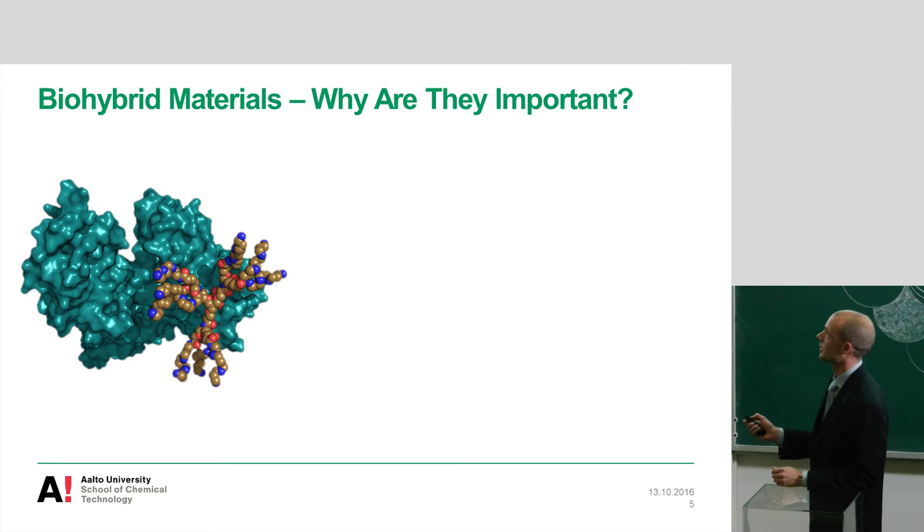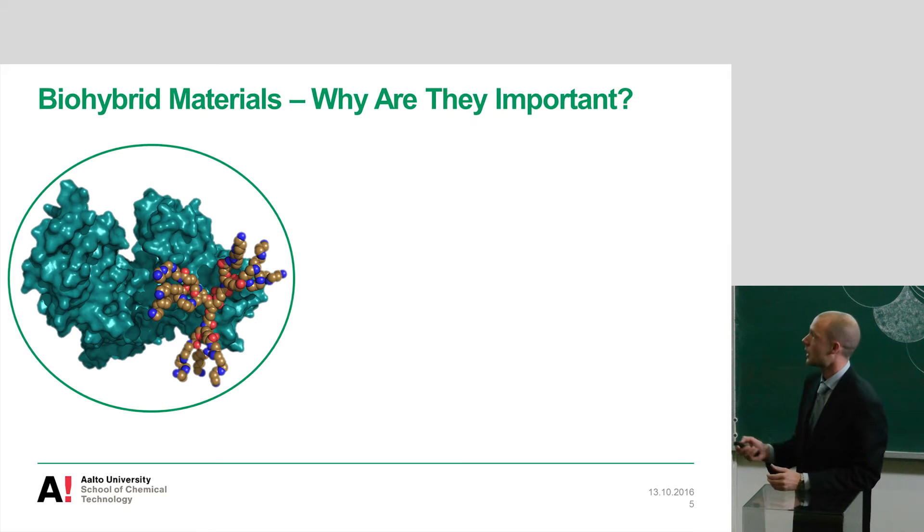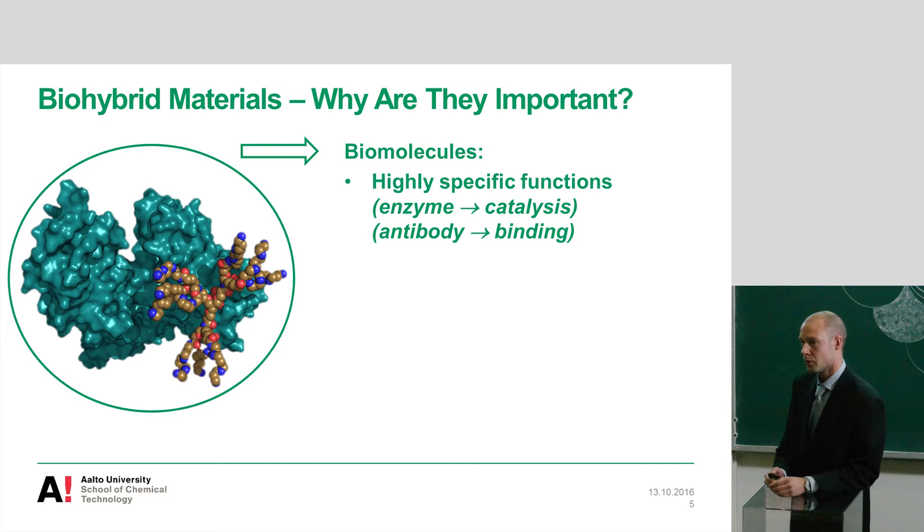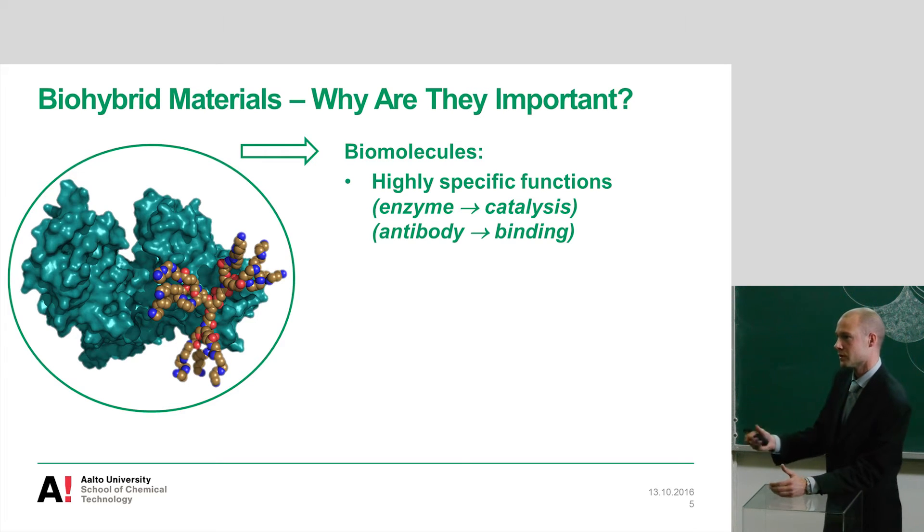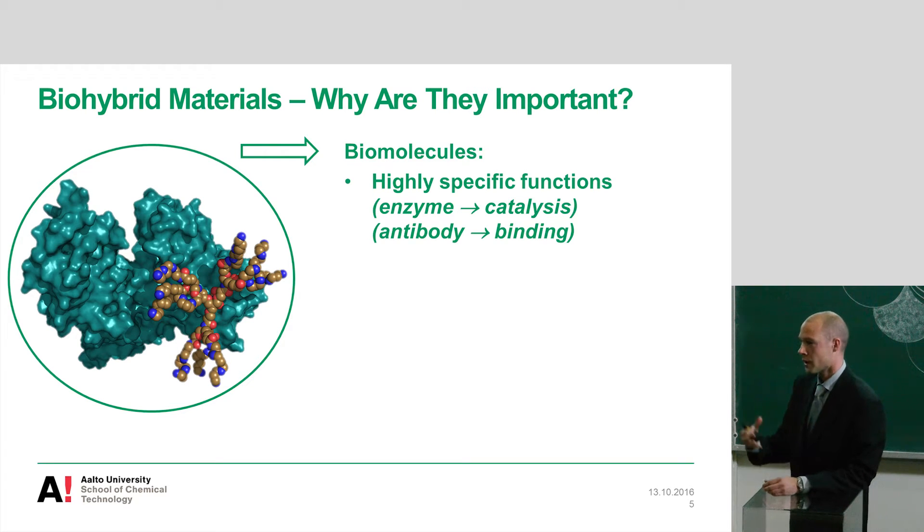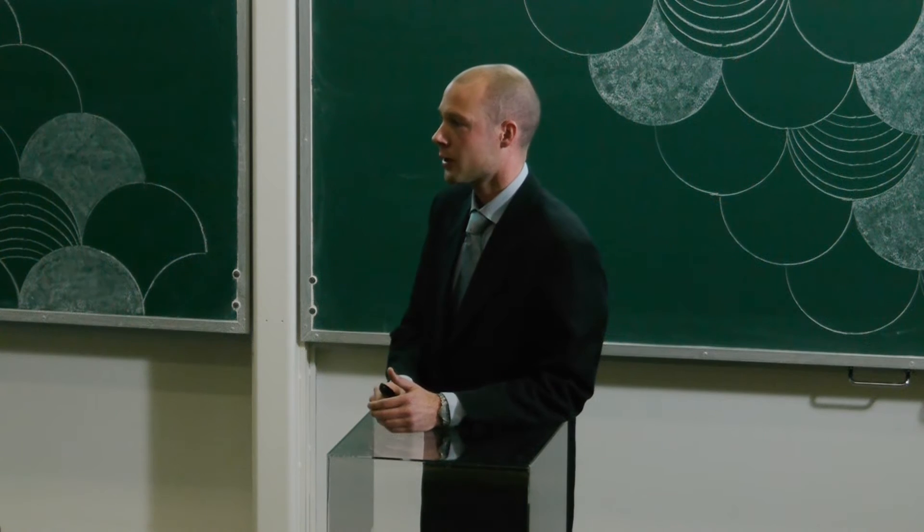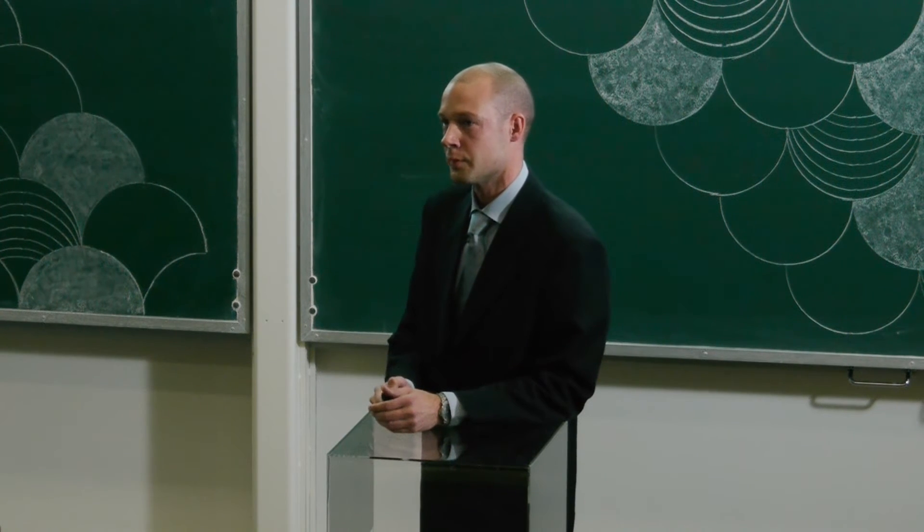Here we have a schematic image of a protein that has a synthetic molecule on it. And now, if we consider what are these biological parts good for? For example, a protein in this case. So if we have, for example, an enzyme that is capable of catalyzing chemical reactions in very efficient and specific manner. If we have, for example, an antibody, then these molecules can actually recognize the binding targets very efficiently and again very specifically. So very highly specified systems have been achieved by biomolecules.